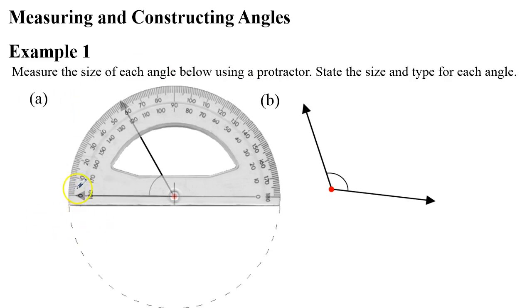Something that's very important to note is this zero is on the outside of the protractor, not the inside. And we'll talk a little bit later about why that's important.